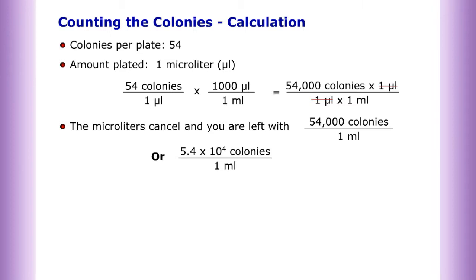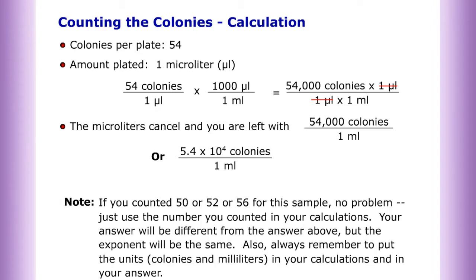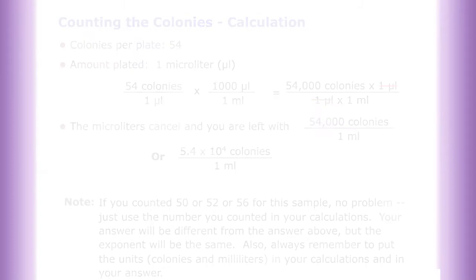Note: if you counted 50, 52, or 56 for this sample, no problem — just use the number you counted in your calculations. Your answer will be different from the example above, but the exponent will be the same. Always remember to put the units of colonies and milliliters in your calculations and in your answer.